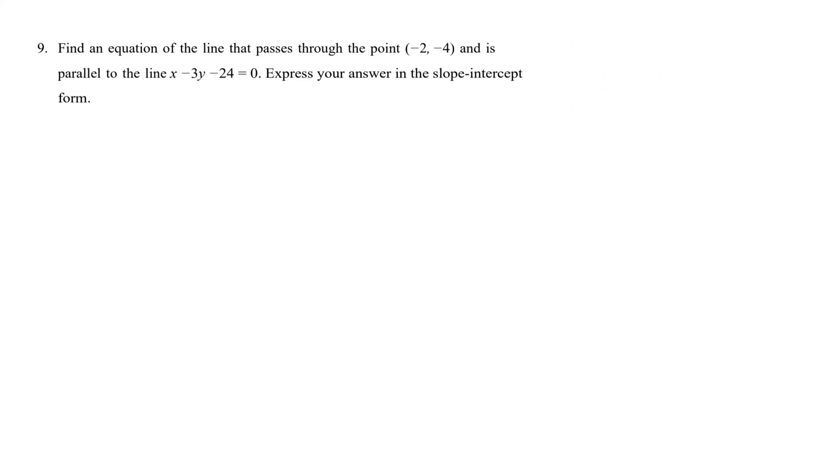Hello everyone. For this question, we are to find an equation of the line that passes through the point with coordinates negative 2 and negative 4, and is parallel to the line with the equation x minus 3y minus 24 equals 0.